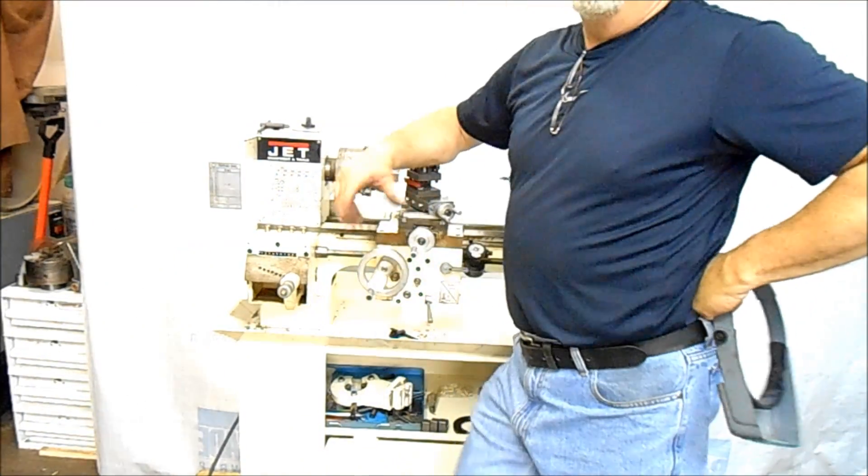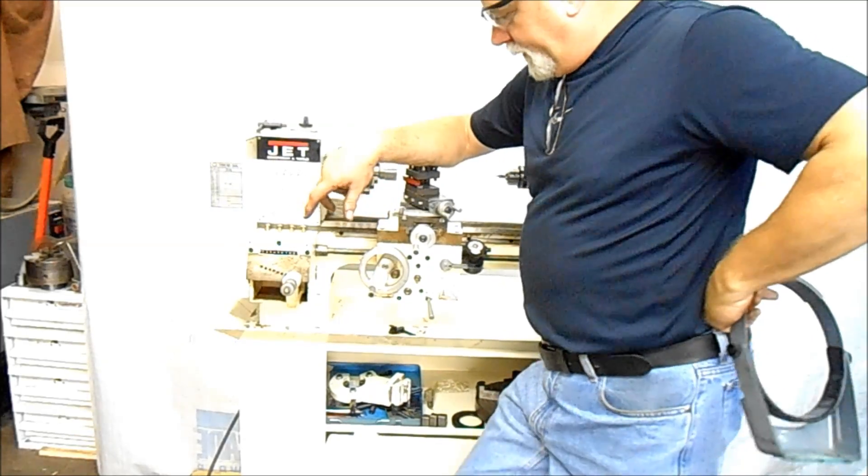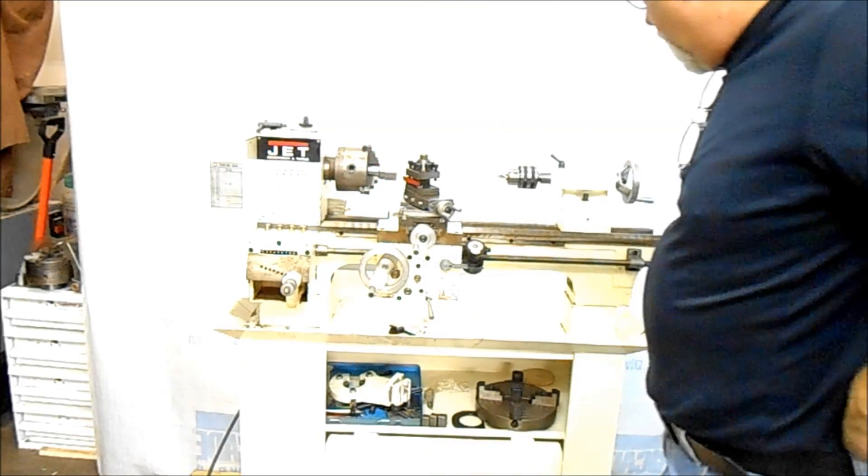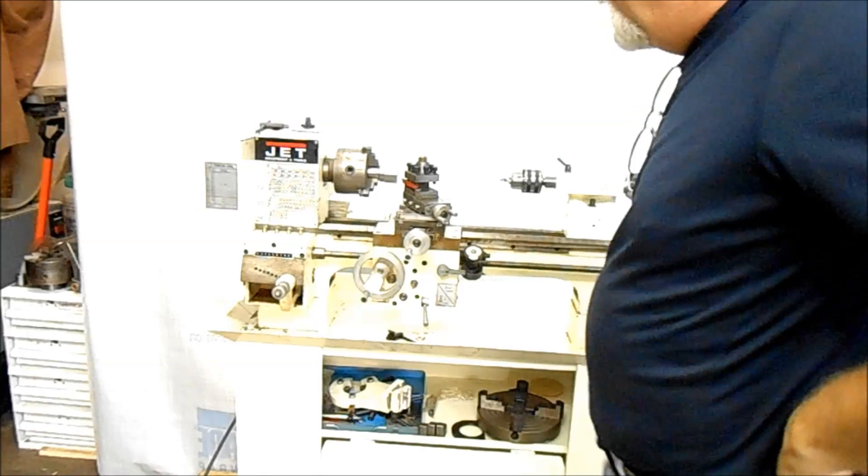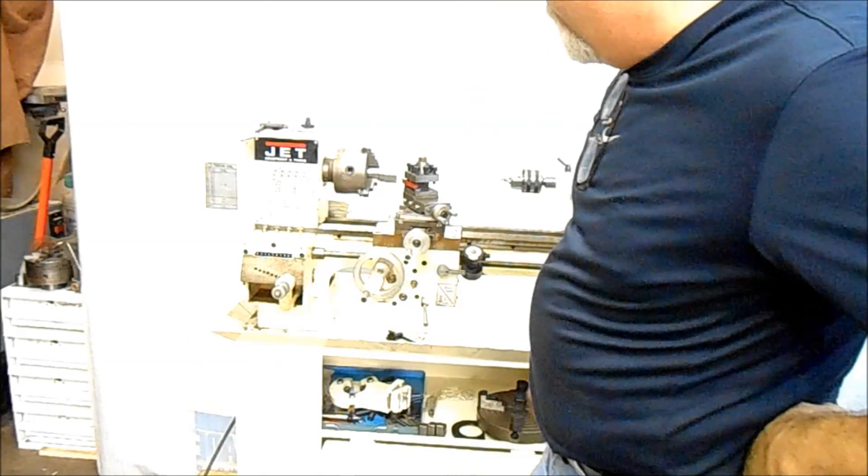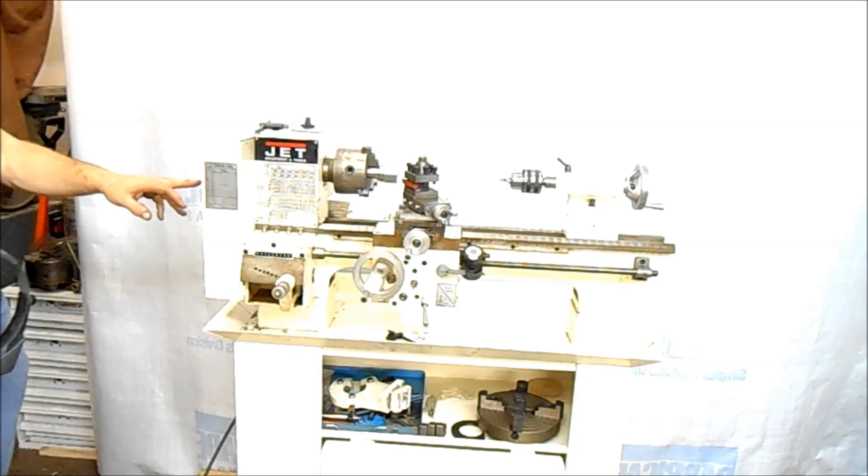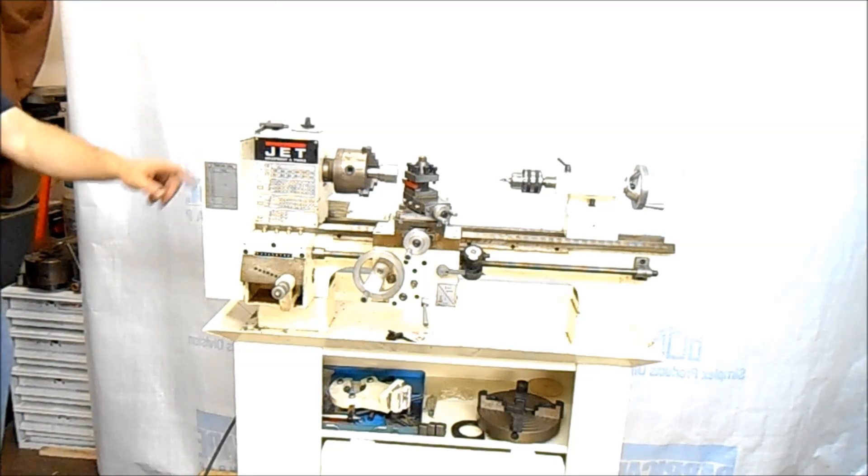Hey, this is Lucas, and I want to show this little Jet 9x20 lathe. It's got a part number, I think it's a BD920N, if I'm not mistaken. Yeah, BD920N.